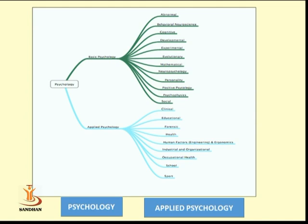Basic psychology considers abnormal, behavioral, neuroscience, cognitive, developmental, experimental, evolutionary, mathematical, neuropsychology, personality, positive psychology, psychophysics, and social psychology.